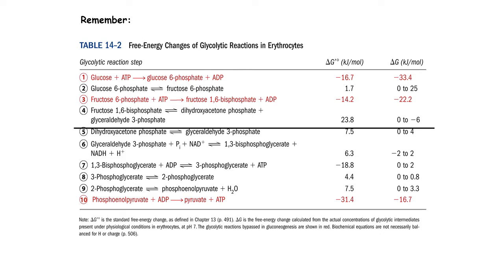As mentioned in the glycolysis video — linked in the description below — in this table glycolysis steps 1, 3, and 10, shown in red, are thermodynamically favorable and essentially irreversible. They require a very high amount of energy to reverse.